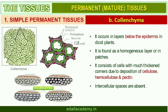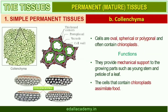Collenchyma occurs in layers below the epidermis in dicotyledonous plants. It is found either as a homogeneous layer or in patches. It consists of cells which are much thickened at the corners due to deposition of cellulose, hemicellulose, and pectin. Collenchymatous cells may be oval, spherical, or polygonal and often contain chloroplasts, which allow them to assimilate food. Intercellular spaces are absent. They provide mechanical support to growing parts of the plant such as young stem and petiole of a leaf.